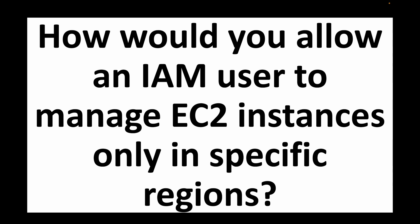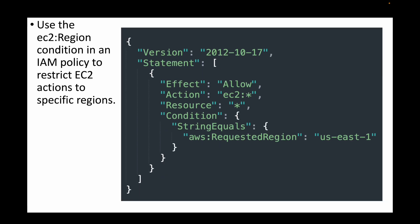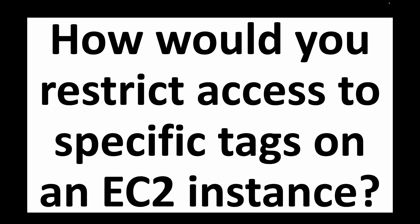The next question is: how would you allow an IAM user to manage EC2 instances only in specific regions? Again, we define an IAM policy and use the condition key. We allow all EC2 actions, and the condition checks for the region — for example, us-east-1. If the user is in that particular region, they are allowed to work with the EC2 service; if they are in any other region, no actions are permitted.